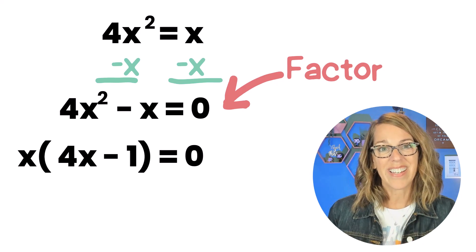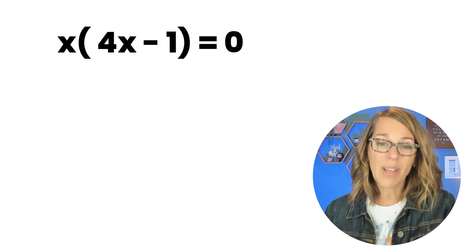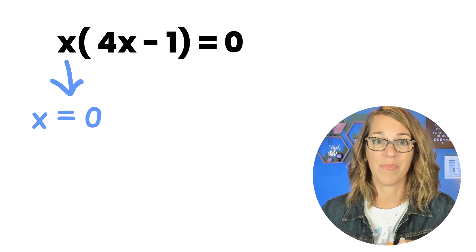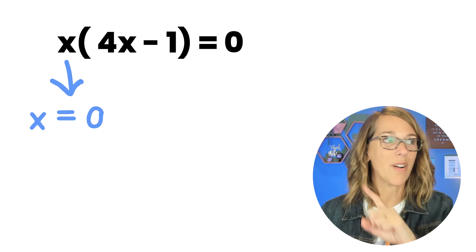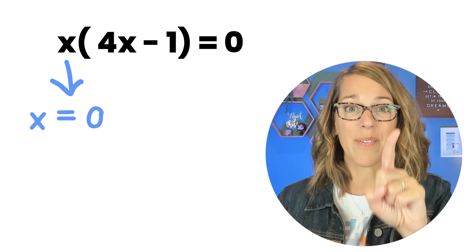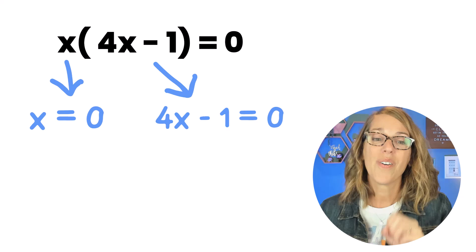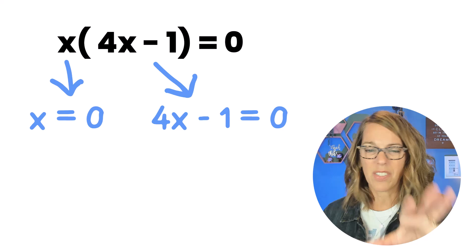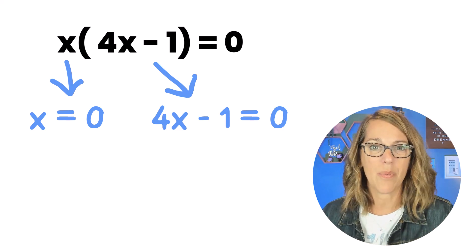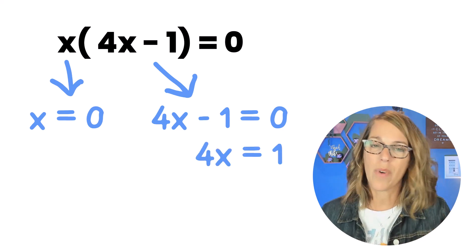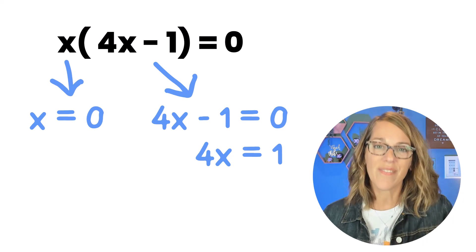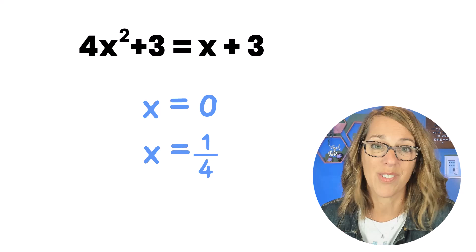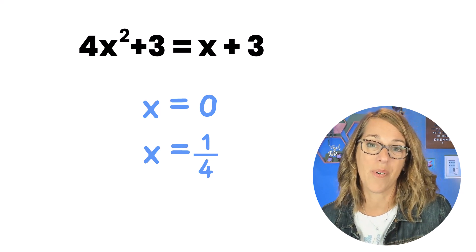So what we've done is to create this product. Something times something equals zero. Well either of those somethings could be zero. So the x could be equal to a zero. There's one of our solutions. That was the one we missed. Or 4x minus one could be equal to zero. This gives us just a super nice simple mini equation that we can solve. Bring the one over to the other side. Divide by four and we get 1/4. So our two solutions are zero and 1/4.